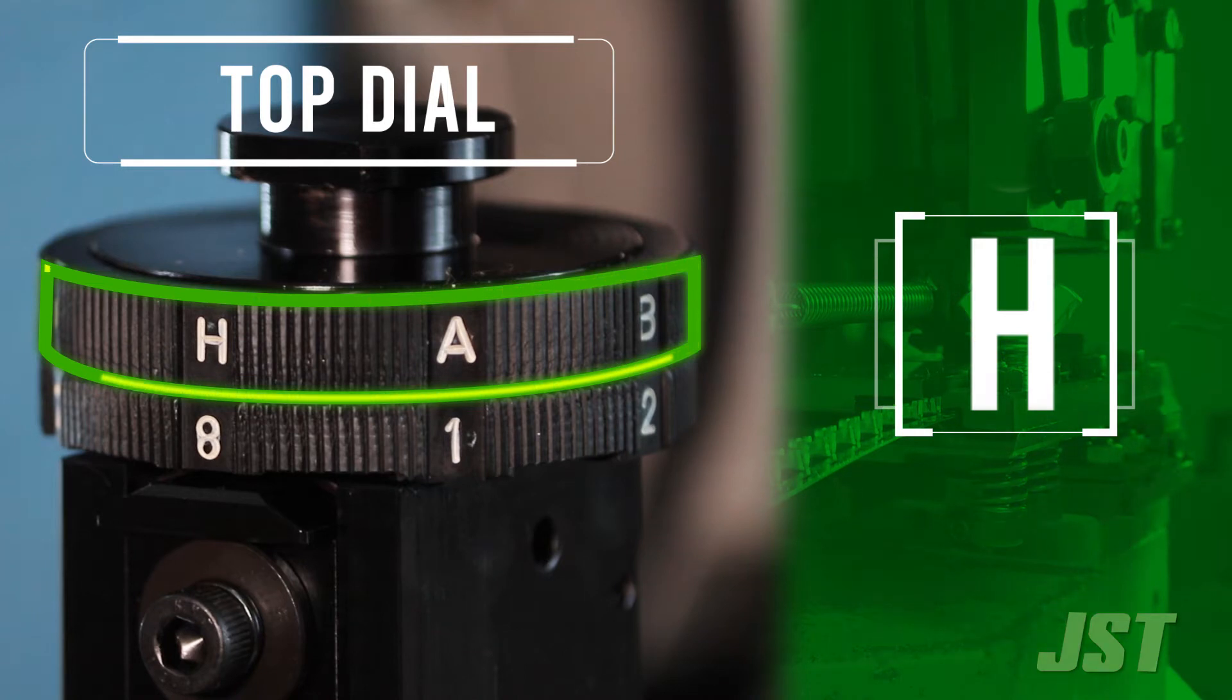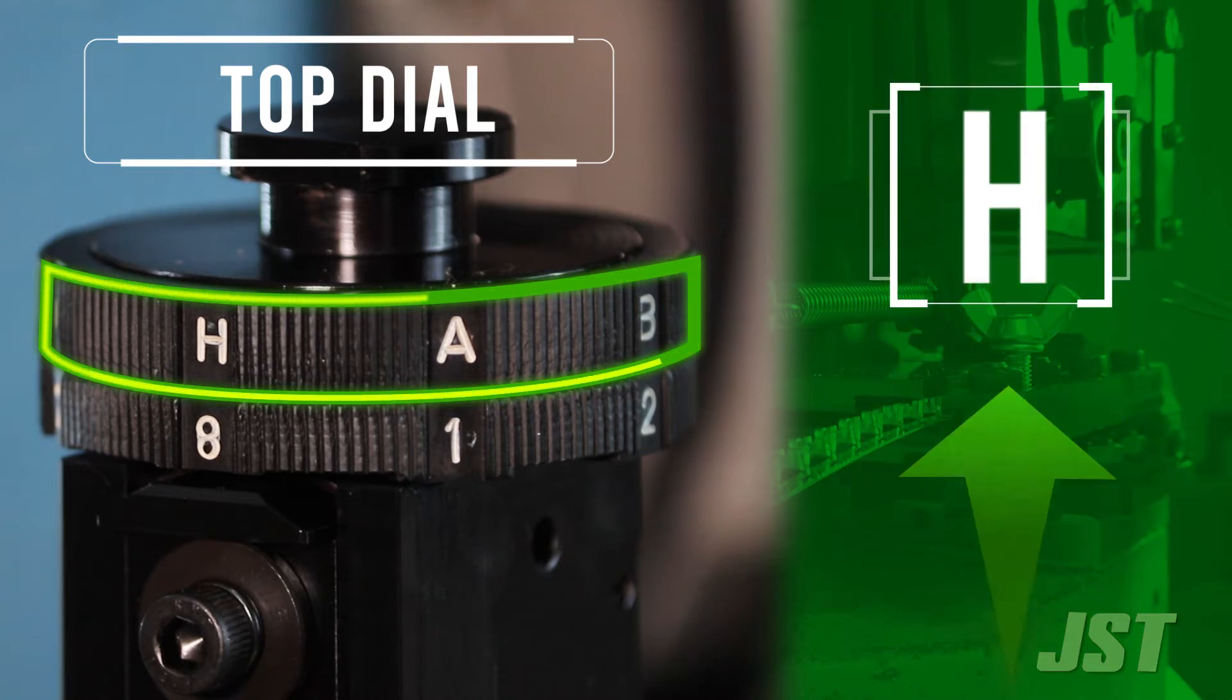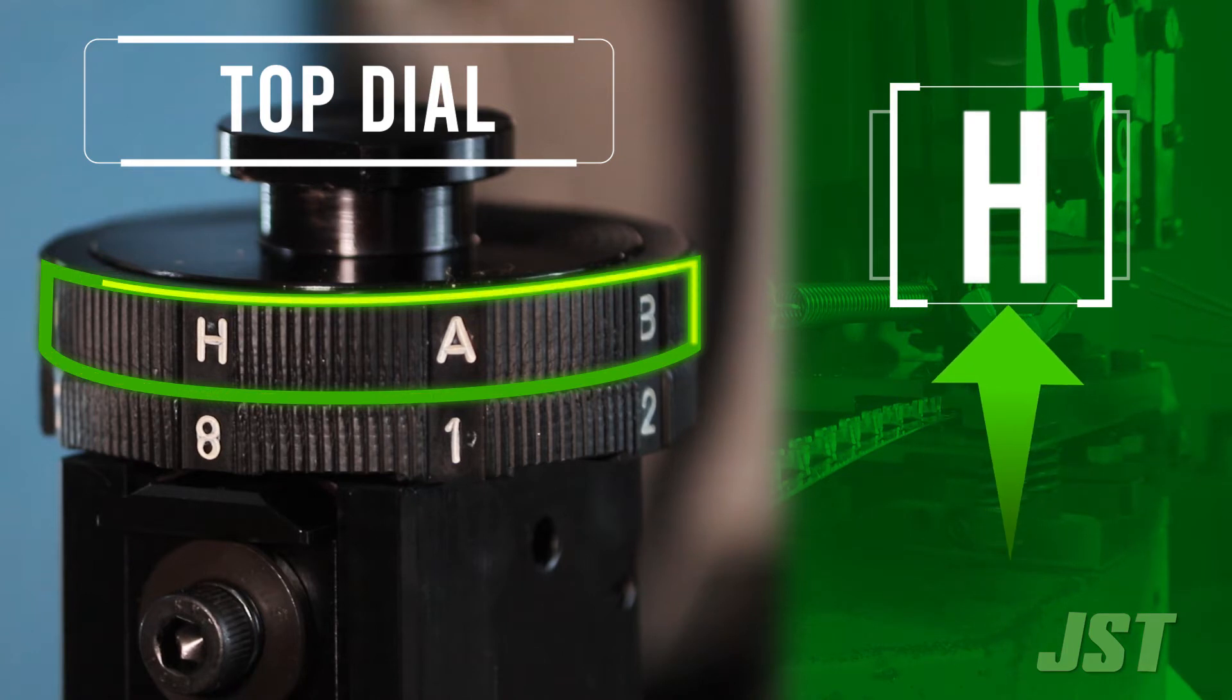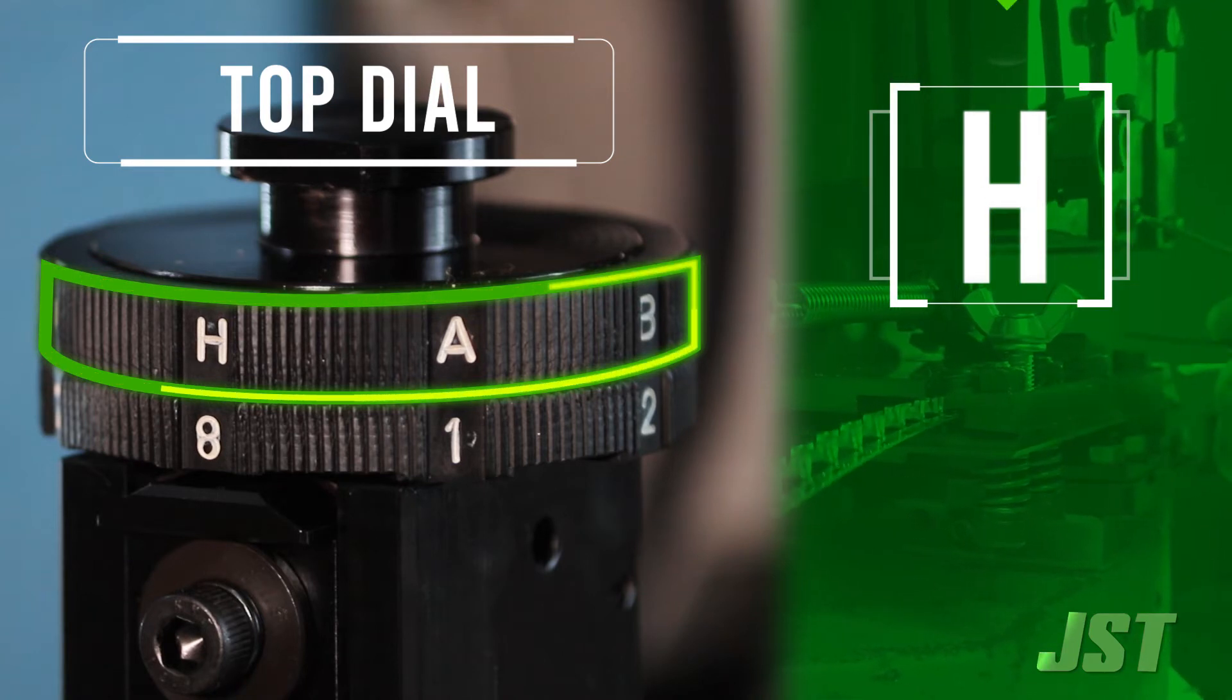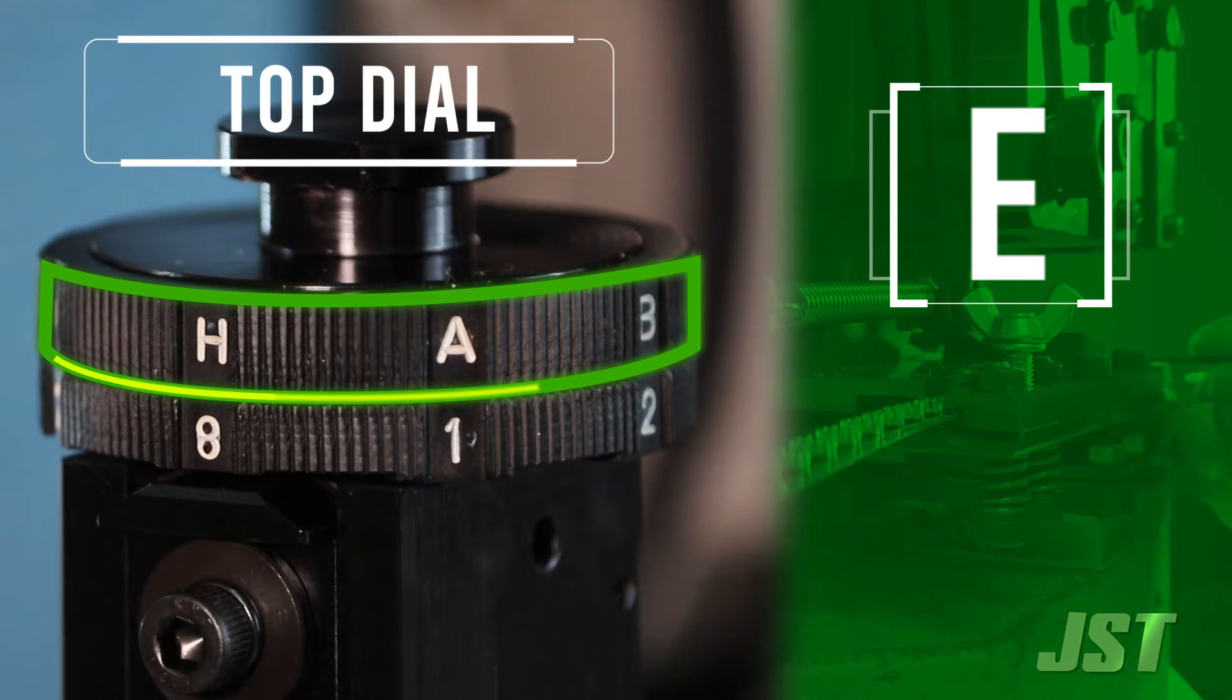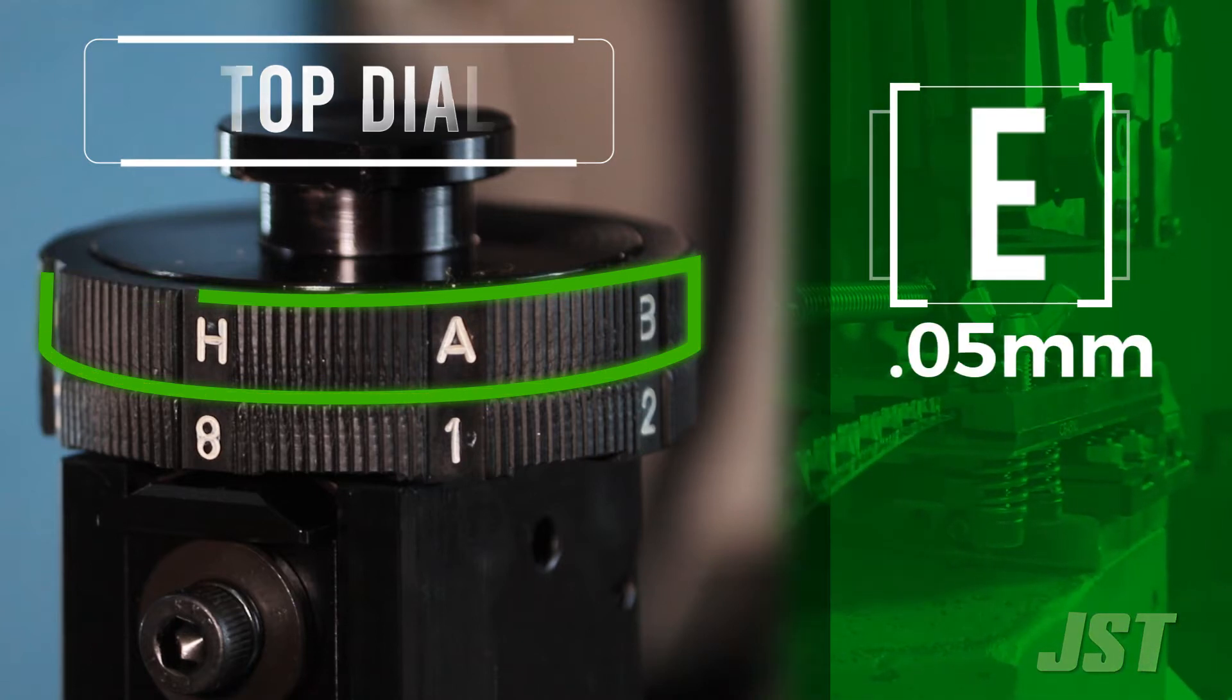H is the highest setting for the conductor and should always be the starting point. Each letter adjustment down changes the crimp height by 0.05 mm.